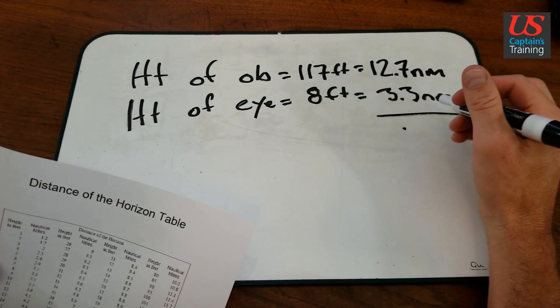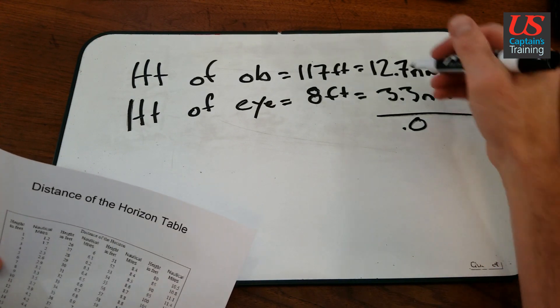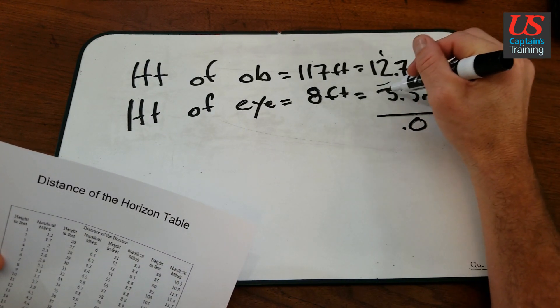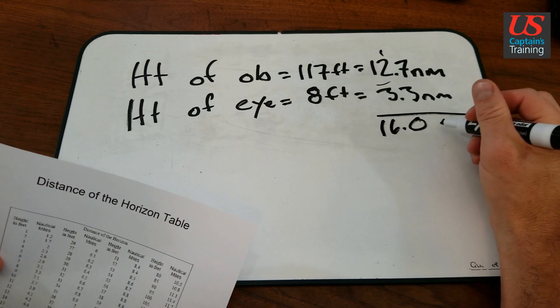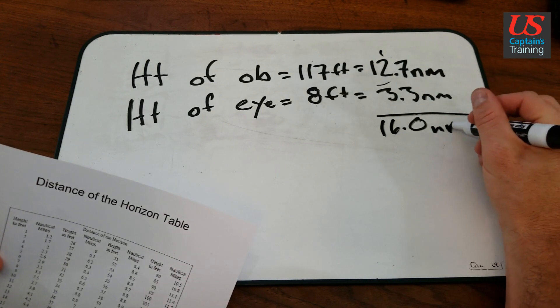7 plus 3 is 10, yeah, 13, 14, 15, 16. We're getting 16 nautical miles.